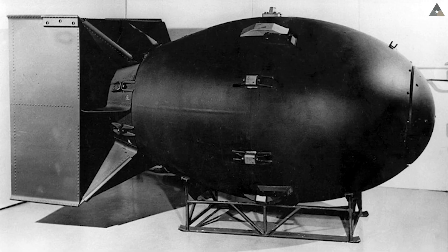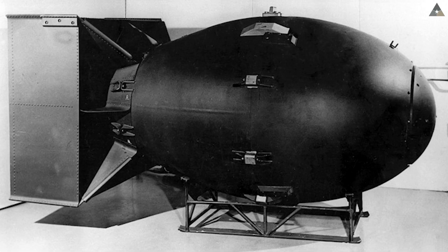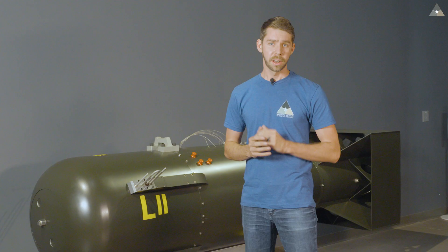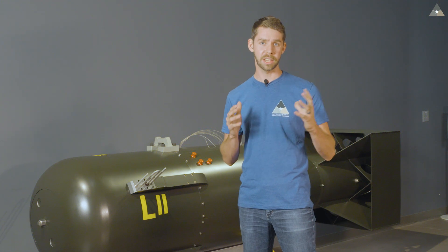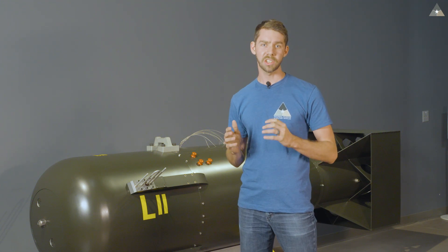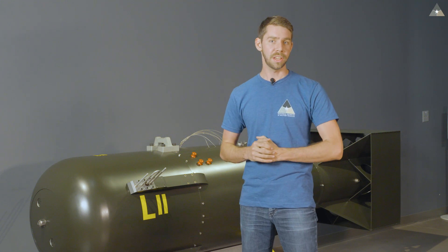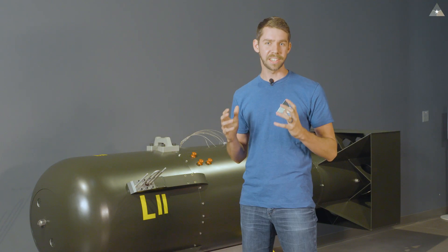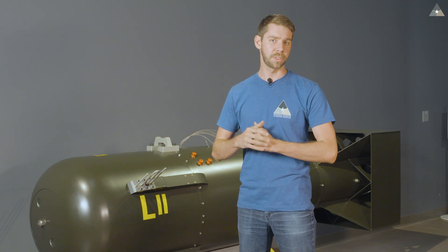The implosion-style bomb, now called Fat Man, would be dropped on Nagasaki on August 9th, 1945. The reason why the implosion-style bomb was detonated during the Trinity tests instead of the gun-type bomb was because scientists were far more confident with how the gun-type bomb worked rather than the idea of pressing a plutonium core with COMP-B explosives.